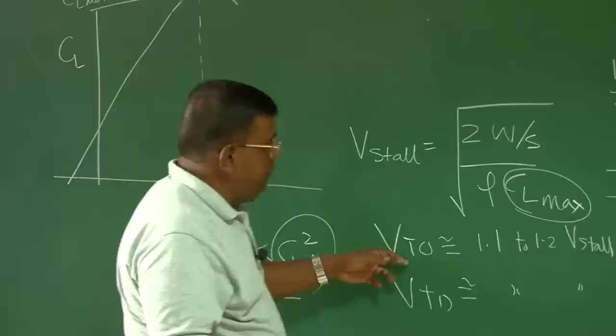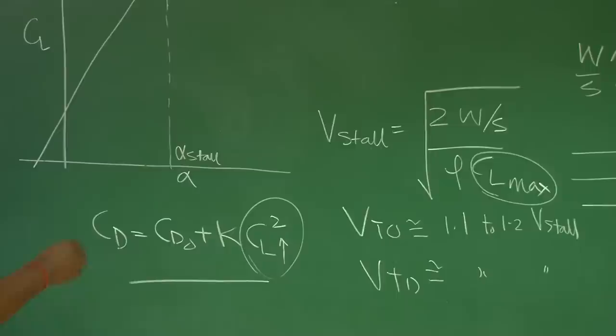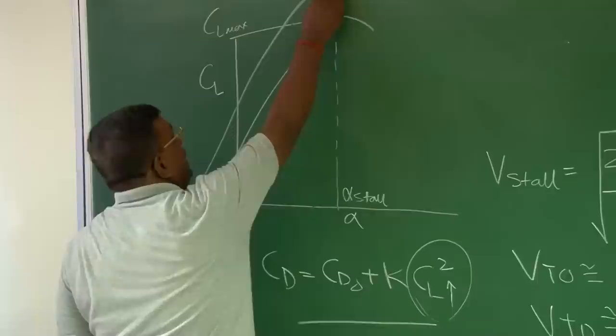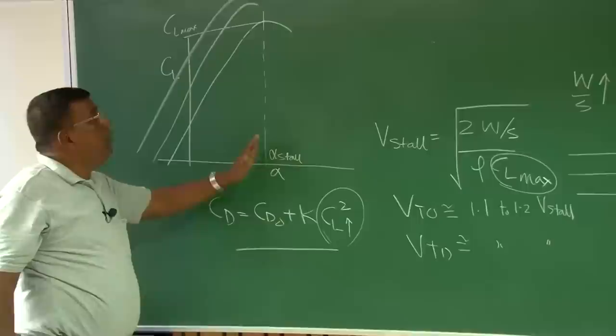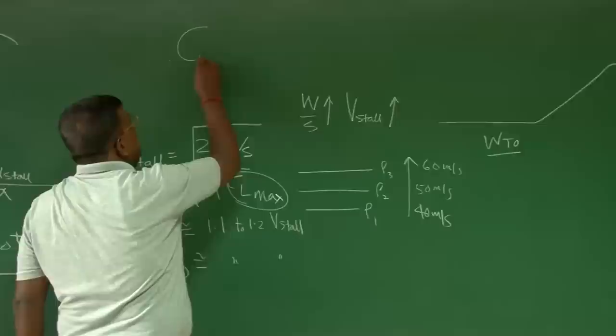The best way to lower V_stall is to increase CL_max locally. From the drag polar, CD equals CD_naught plus K·CL², so if we fly at a permanently higher CL, total drag increases, which is not advisable. But for short durations — especially during takeoff or landing — we would like CL_max to be as high as possible, so that V_takeoff or V_landing, which is 10 to 20 percent above V_stall, is also low.